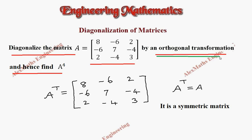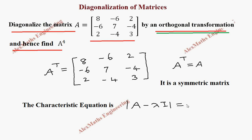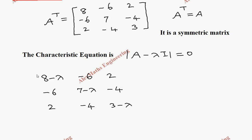Now we have to write the characteristic equation. It is the determinant of A minus lambda I equal to 0. So we have the 3x3 determinant: 8 minus lambda, minus 6, 2; then minus 6, 7 minus lambda, minus 4; then 2, minus 4, 3 minus lambda. This determinant value we are equating to 0.